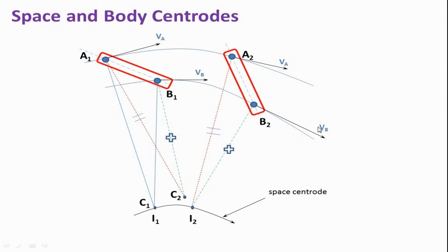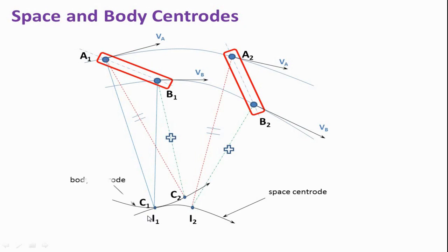For position A3 B3, we can similarly locate C3. Drawing a curve through C1, C2, C3 gives the body centroid curve. C1 and C2 are the body centroids for positions A1 B1 and A2 B2 respectively. When the link is at position A1 B1, C1 coincides with I1; when the link moves to A2 B2, C2 coincides with I2. This means the body centroid circle is rolling over the space centroid circle — this is the body centroid.